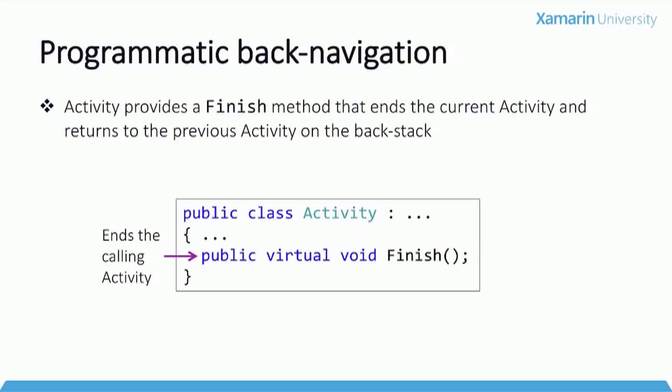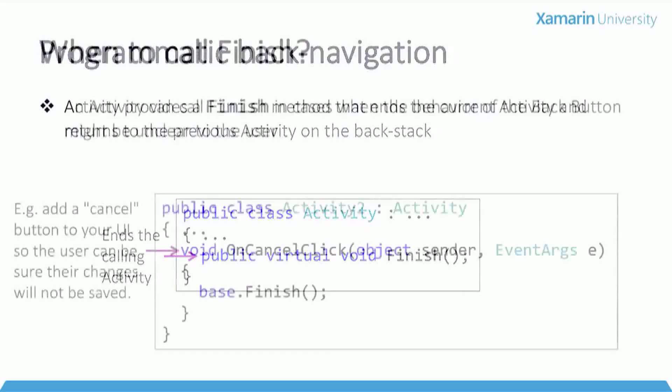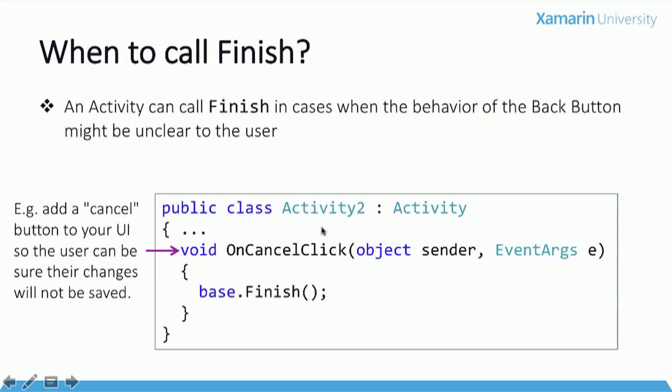There are cases where the back button isn't enough — the classic one is implementing Save or Cancel buttons. In that case an activity might want to tell Android it's done, pop itself off the back stack, and return the user to the previous activity. To do that you call the Finish method — a method you inherit as an activity. Here's a quick example in what looks like a click handler for a Cancel button. If it were a Save button you would save the user's data first and then call Finish. In either case, calling Finish ends your activity, pops it off the back stack, and sends the user to the previous activity.